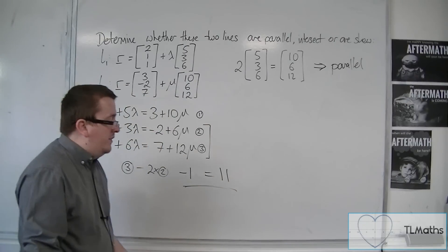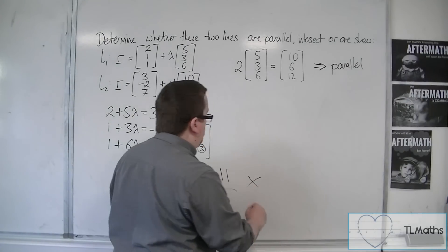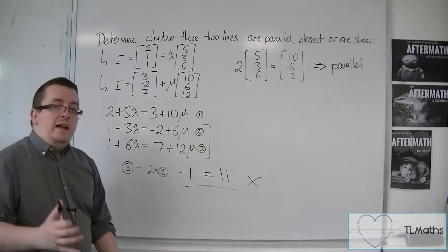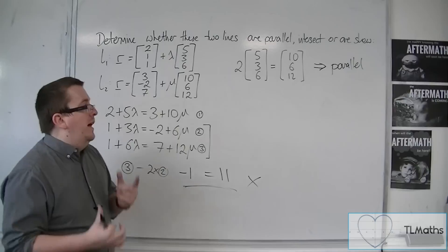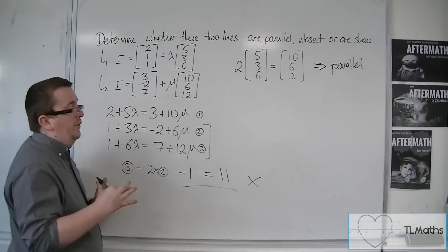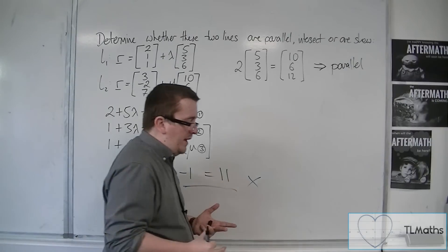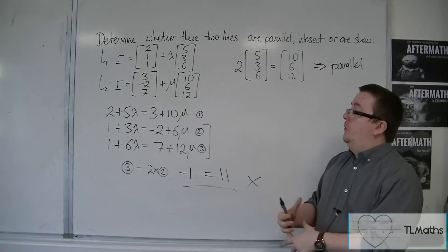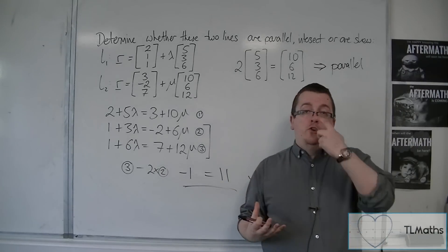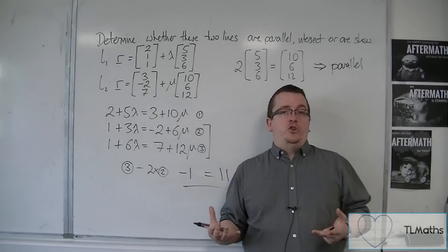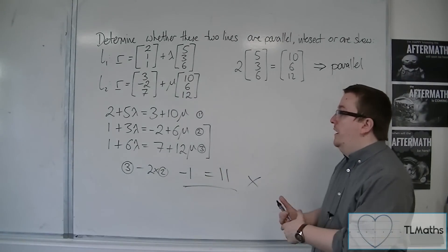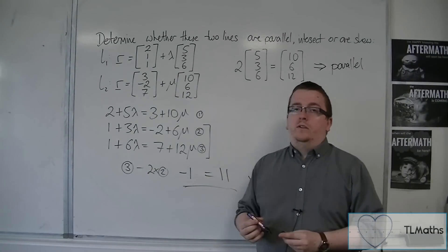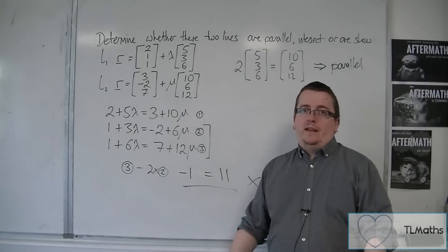So you get left with, clearly, something that is completely wrong. And that shows you that the two lines must be parallel. In order for you not to come to either a lambda or a mu from just two equations, two of the three equations, must mean that they are parallel. So that is a double-checking tool.